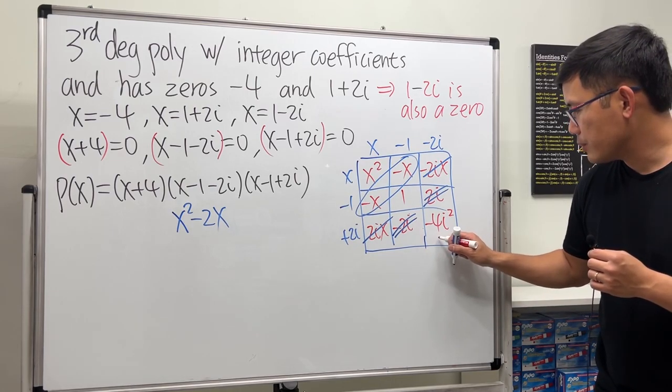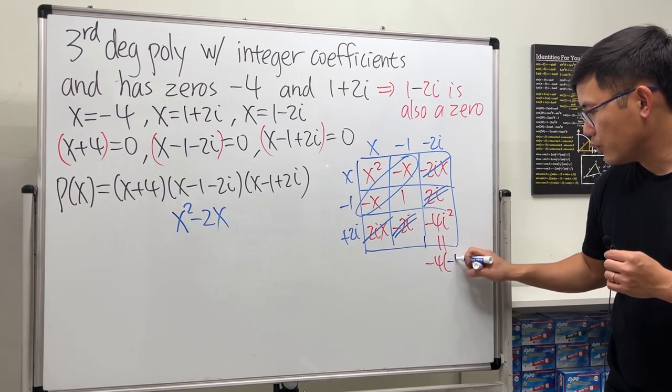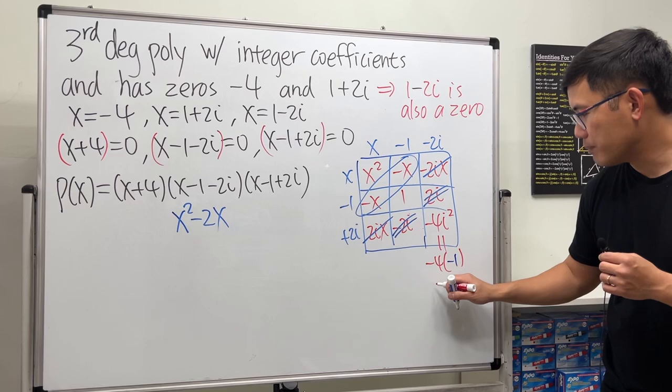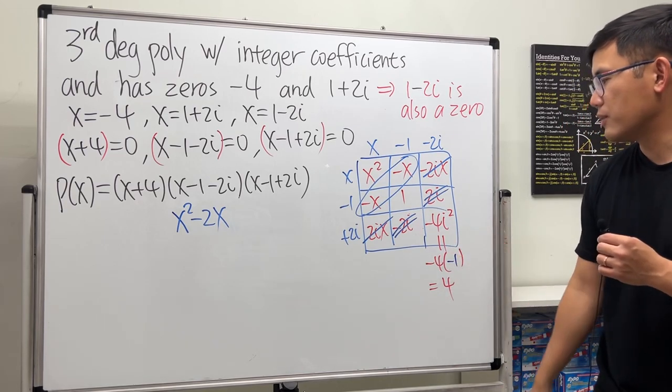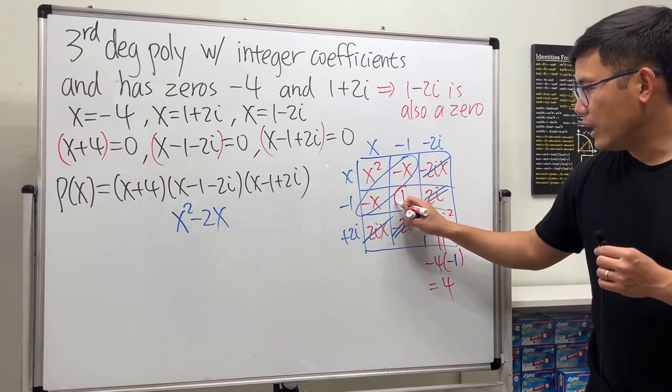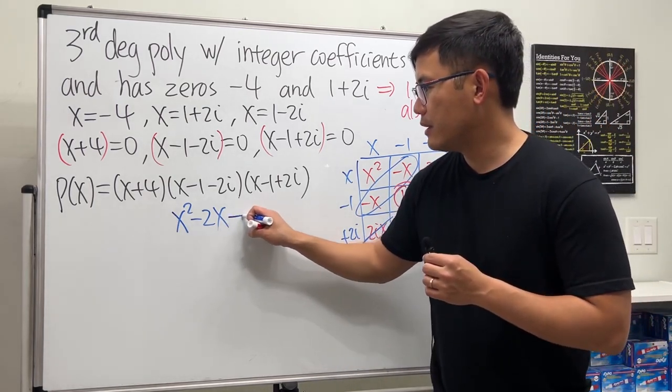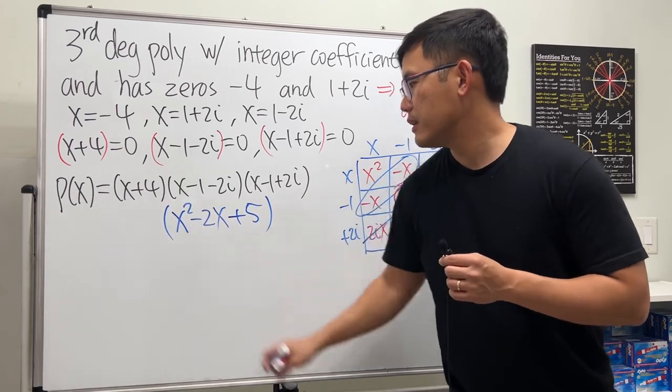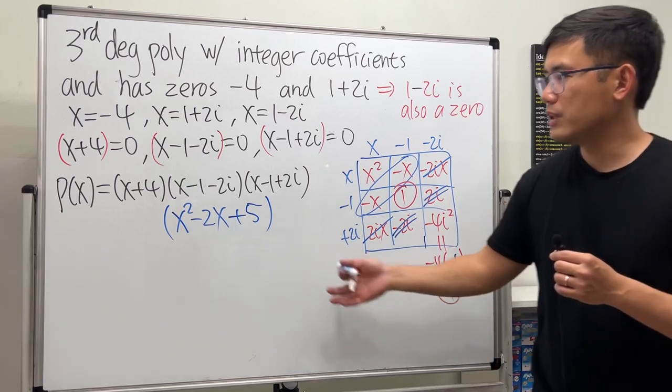But wait, how about this? This is not a complex number because i² = -1. This box here is -4 times -1, so in fact this is positive 4. If you add 1 and 4 together we get 5.